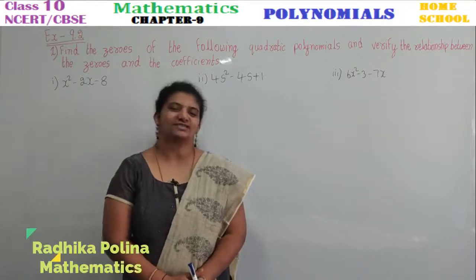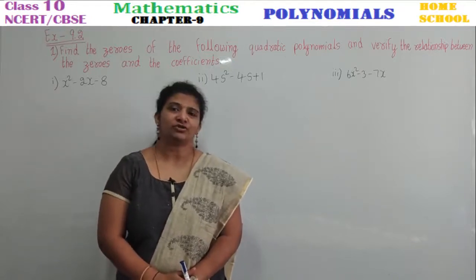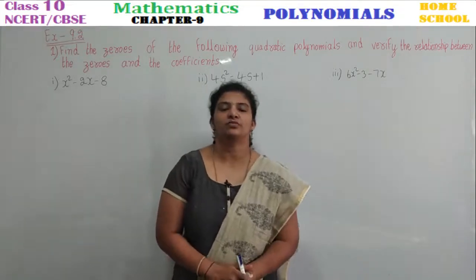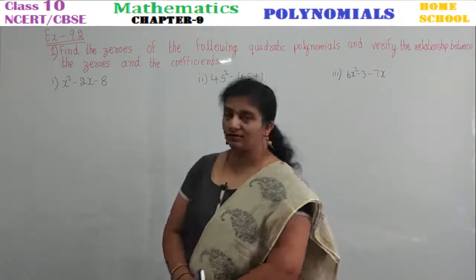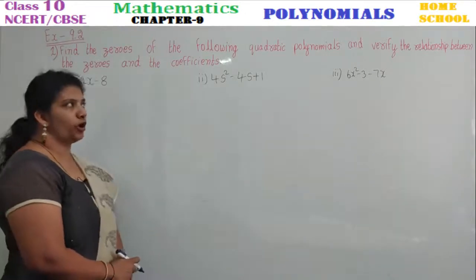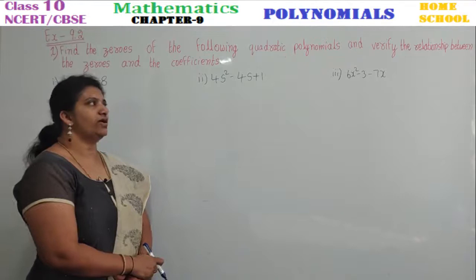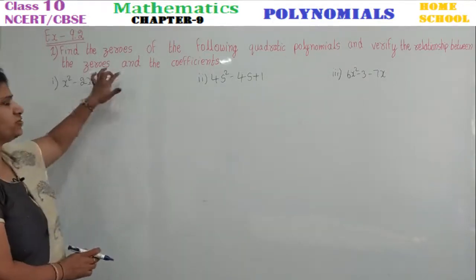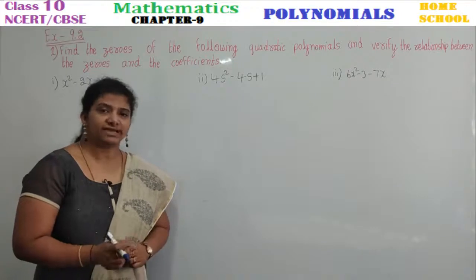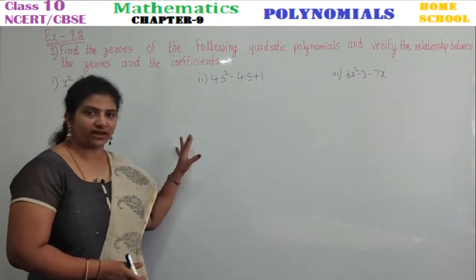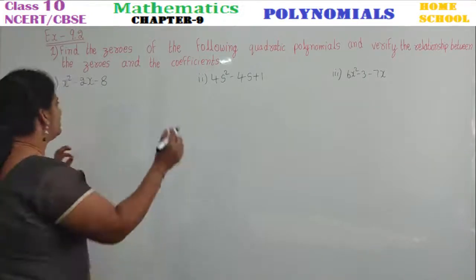Hi children, hello, welcome to home school. This is class 10 mathematics, NCERT or CBSE board, and we are in a new chapter — chapter 9, polynomials. In this polynomials chapter, we are going to start with the second exercise, that is exercise 9.2. The first main asks us to find the zeros of the following quadratic polynomials. A quadratic polynomial has degree 2. We will also verify the relationship between the zeros and the coefficients. Let's start the first problem.